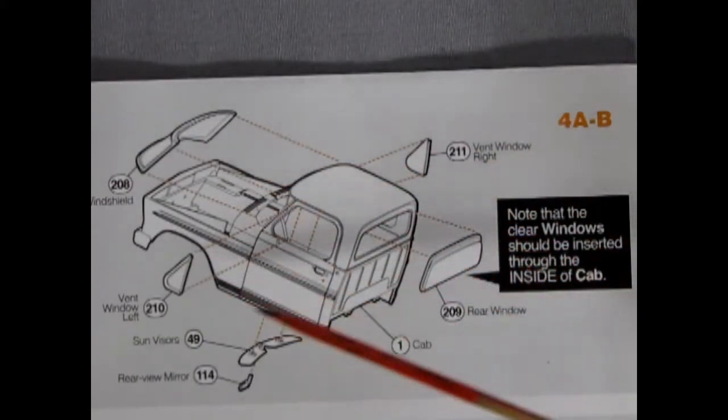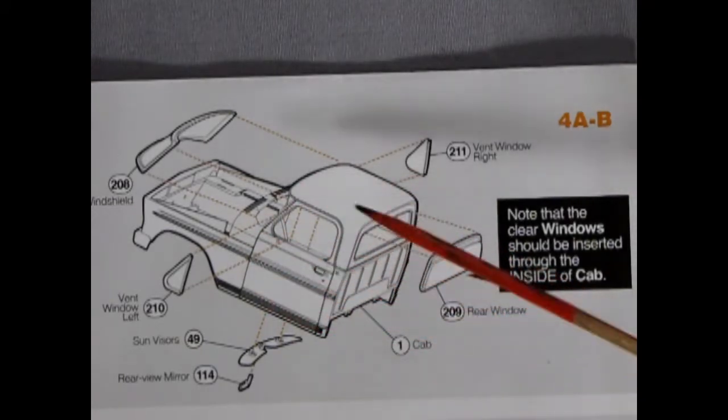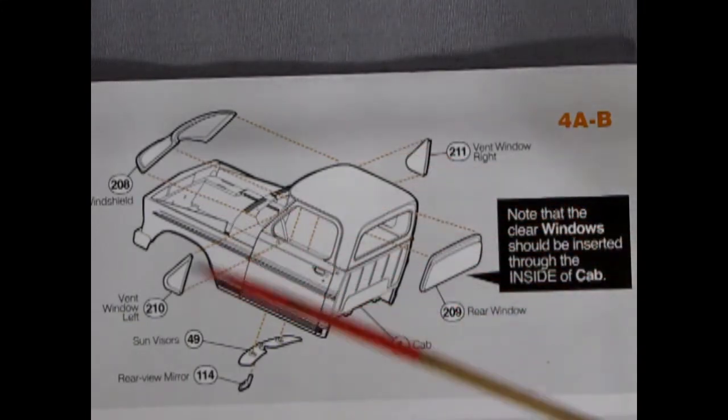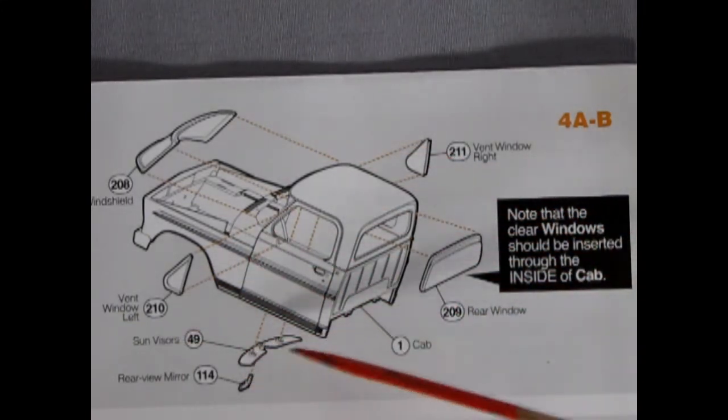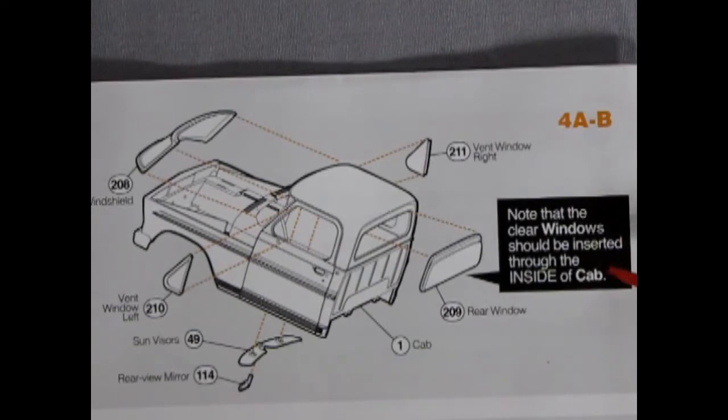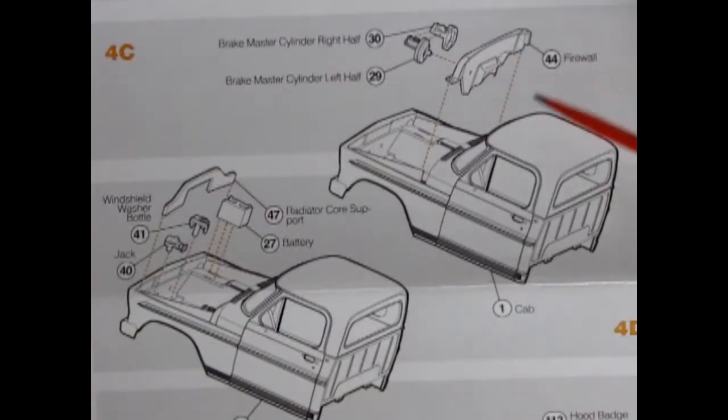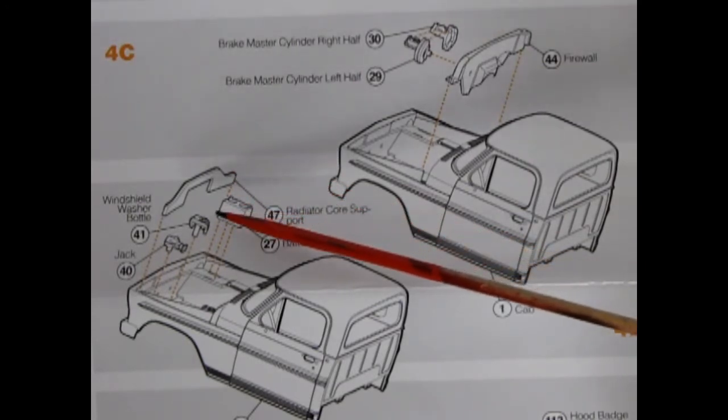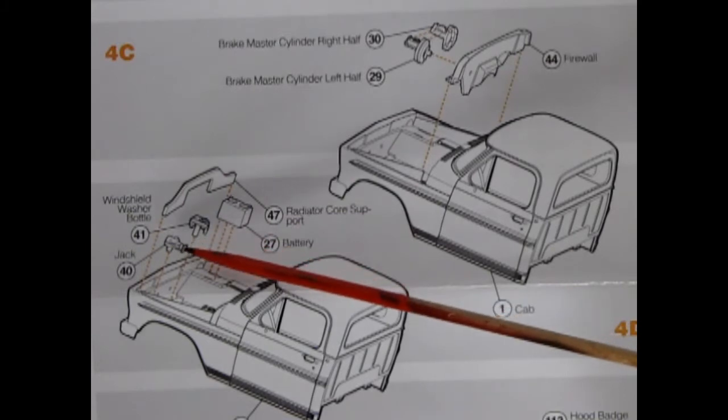Now you're going to have to paint your cab first which we can see in our painting instructions toward the back, but once that is done you can add in all your mirrors and windows and the sun visors. Note that the clear windows should be inserted through the inside of the cab. And we can complete our cab by taking our master cylinder right and left hand side gluing them together and gluing them to the firewall which then glues into the cab. Following that we can glue in our radiator support, our battery, and our windshield washer bottle, and our jack.